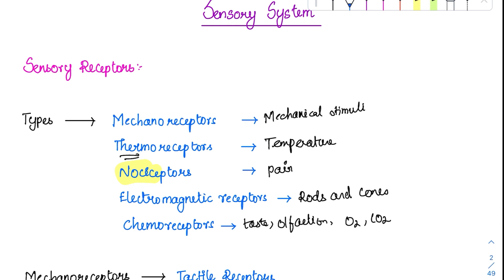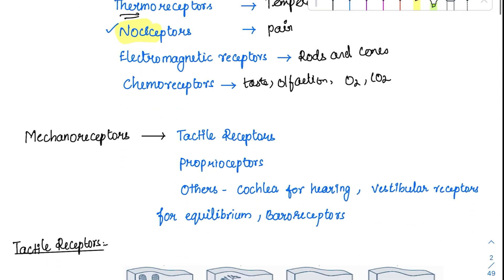Among all types, the mechanoreceptors and nociceptors are most important. Mechanoreceptors are classified into tactile receptors and proprioceptors — both are very important and have been asked multiple times in MCQs. Other mechanoreceptors include the cochlea for hearing and the vestibular apparatus, which senses equilibrium including linear and vertical acceleration.